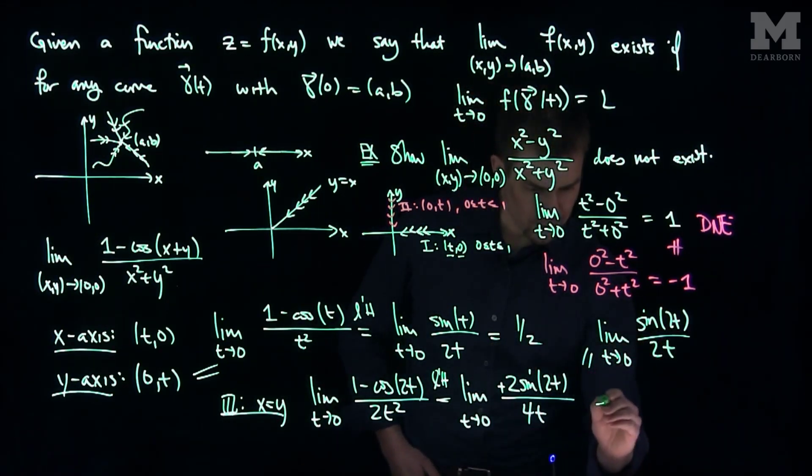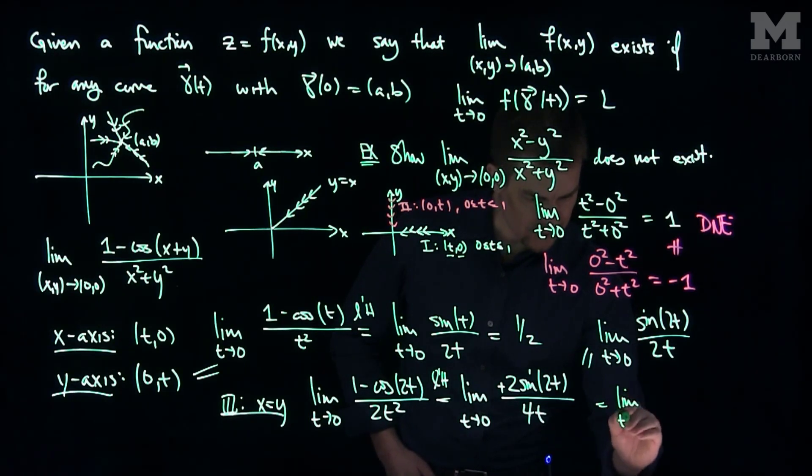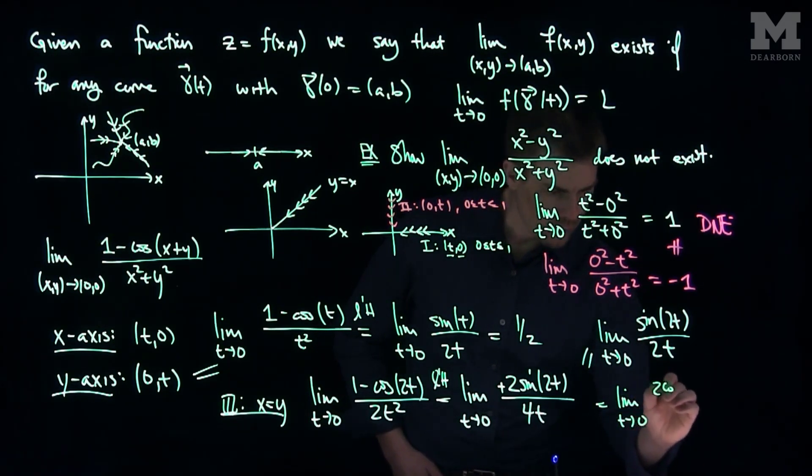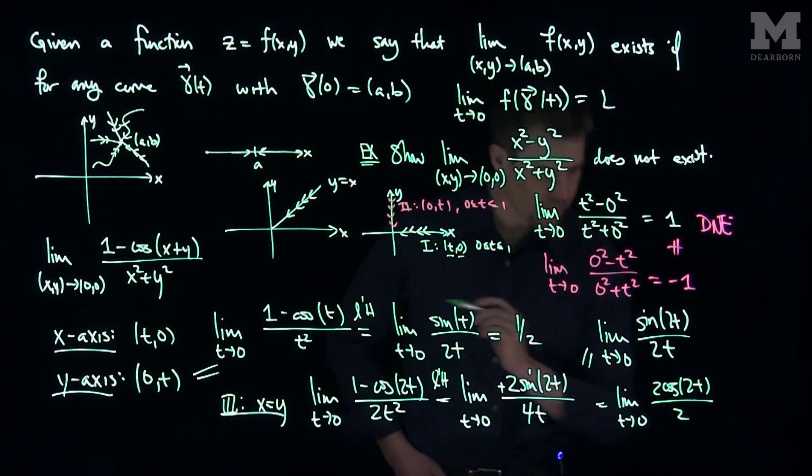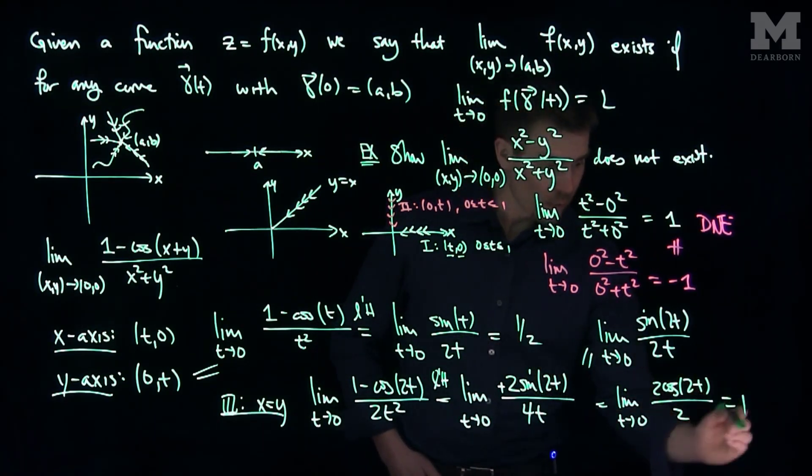this is equal to the limit as t goes to 0 of sine of 2t over 2t. And now this limit, by L'Hopital's rule, the limit as t goes to 0 of 2 cosine 2t over 2, and we see that this limit is equal to 1.